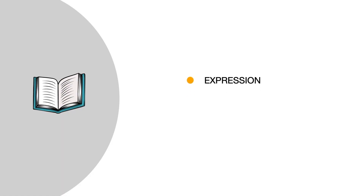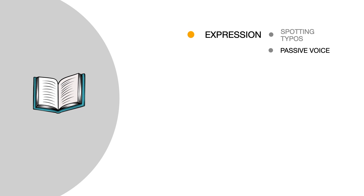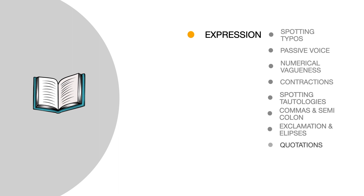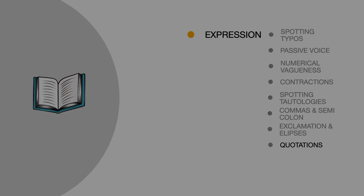Hi, welcome back to my channel. This is part three of the three-part series that I'm filming about how to edit an essay. Today's video is about expression. Today's video will talk about spotting typos, the passive voice, numerical vagueness, contractions, spotting and removing tautologies, commas, the semicolon, exclamation marks and ellipses, and when and how to use quotations.